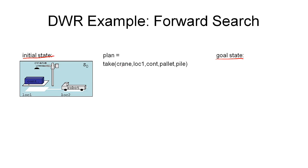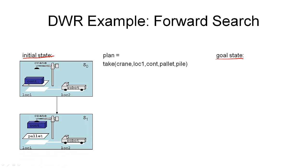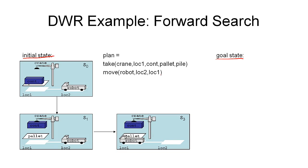In this case, the algorithm selects the action of taking with the crane — there's only one — at location one, the container which is on this pile, from the pallet in the pile. The algorithm then applies the state transition function to get a new state and updates its plan. Continuing through the loop, it checks whether this is a goal state — it isn't — computes the applicable actions, and picks the move action, accordingly computing a new state.